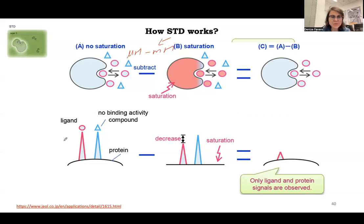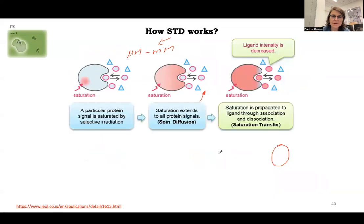When you do the difference, you acquire a reference experiment and a saturation experiment. When you do the difference between your reference and saturation experiments, you have a residual or difference between the two of them because saturation was transferred to the circles and not to the triangles because the triangles are not binding the protein.